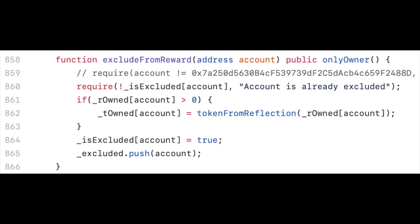In the source code for the Safemoon protocol, there is an empty list named exclude from rewards. And as the name suggests, any wallet address included in this list is exempt from receiving reflections. Now, to stop the burn process from continuing, the developers would simply add the burn wallet address to this list.